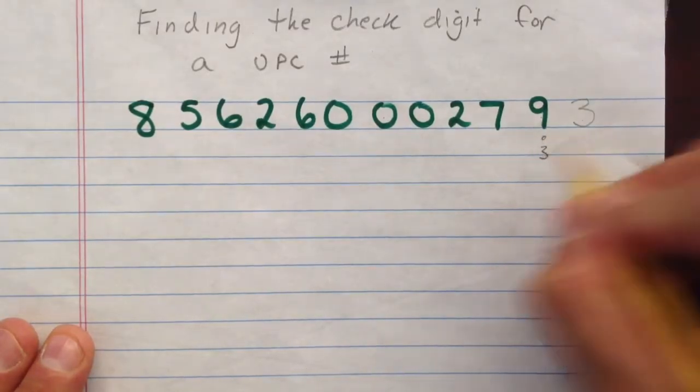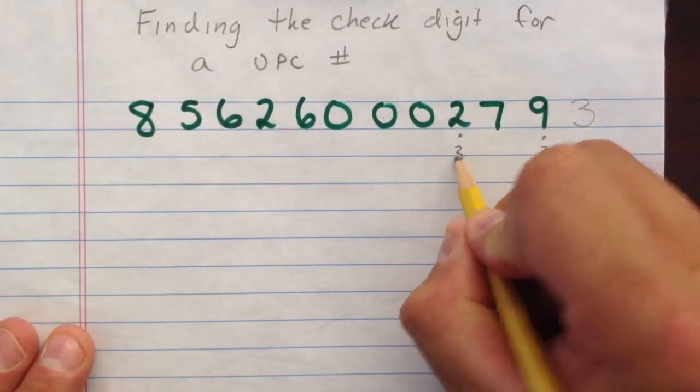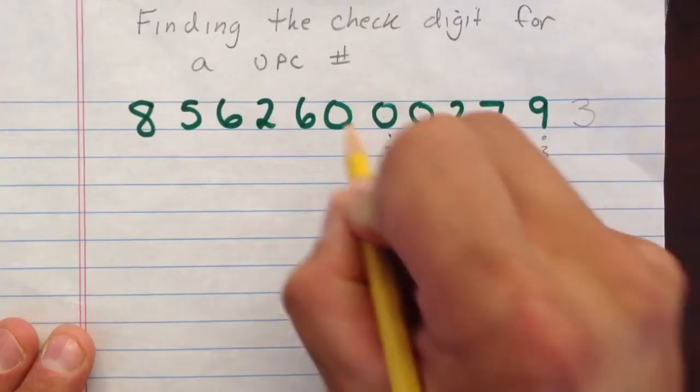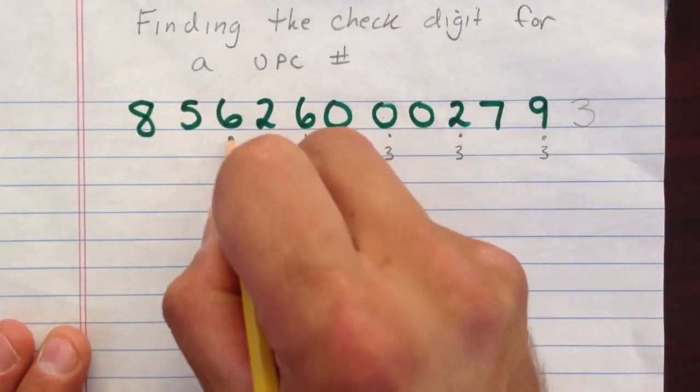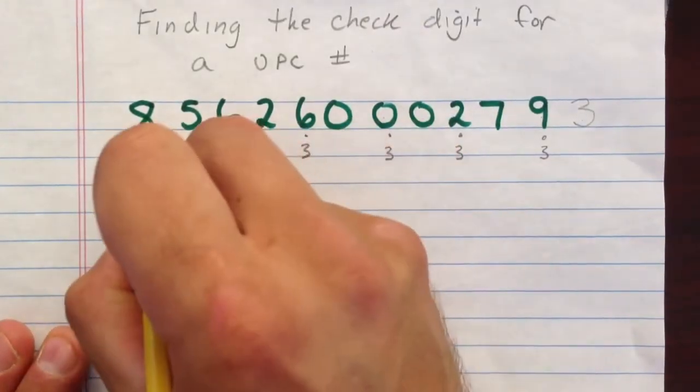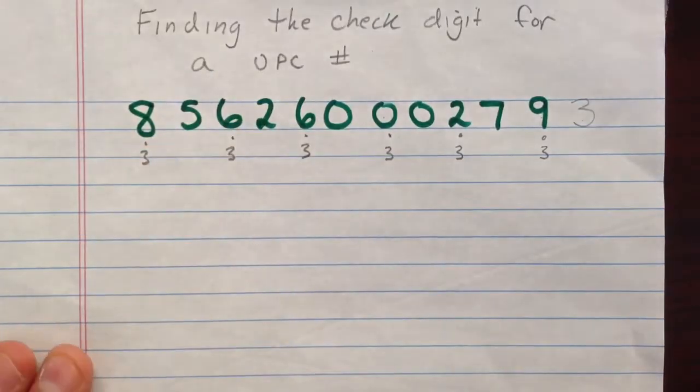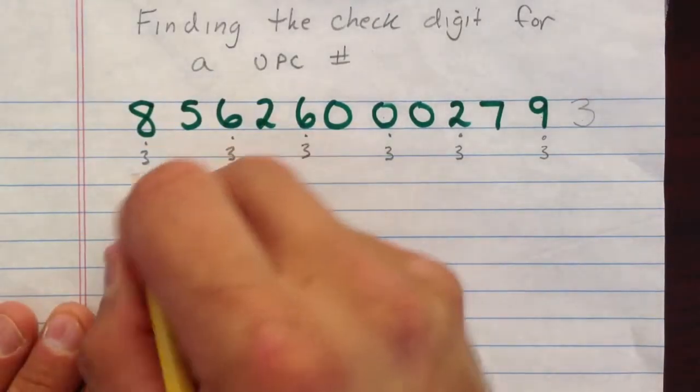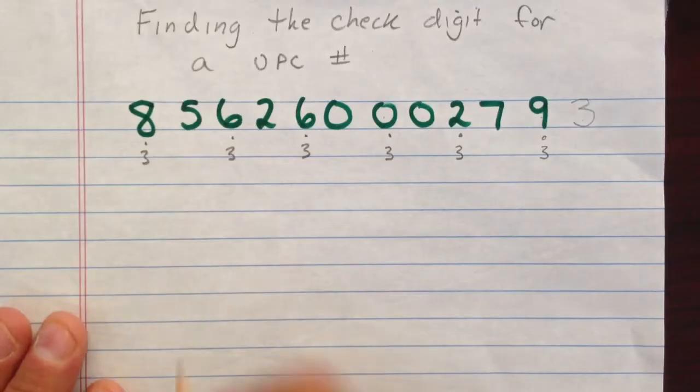So I multiply by 3 for each of these. And then we'll find the product of each of those numbers and bring those down along with the unaffected digits we did not multiply by.